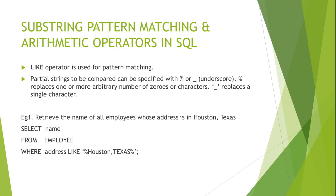We will see an example: retrieve the names of all employees whose address is in Houston, Texas. We have to retrieve the name of all employees living in Houston, Texas. Since address is a multi-valued attribute, it may contain other patterns or substrings along with Houston or Texas, like house name or house number. So we have to compare the whole address with Houston, Texas, and if it matches, it should be retrieved.